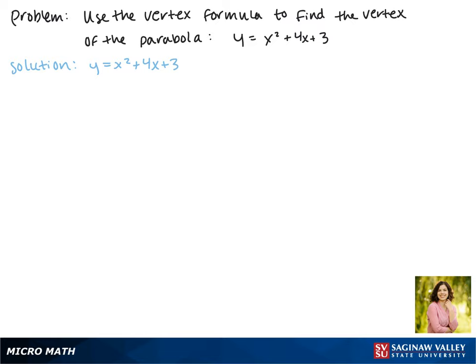Remember that to find the x value of the vertex we use the formula negative b over 2a. Here b is 4 so negative b is negative 4 and a is 1.